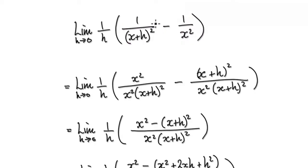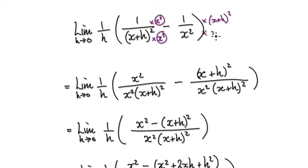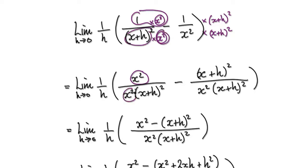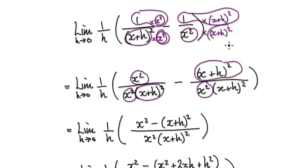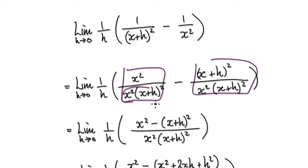We multiply top and bottom by the same thing. For this fraction we're going to multiply top and bottom by x squared, and for this fraction we're going to multiply top and bottom by (x+h) squared. This times this will then give you x squared, and one times this thing will give you this thing.